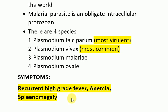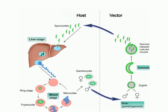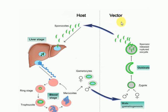Now let us discuss the life cycle of malaria. This image is showing the life cycle of malaria. The life cycle is divided into two parts: number one, the cycle that occurs in the host or human being — that is the sexual cycle — and number two, the cycle that occurs in the vector or mosquito, specifically the female Anopheles mosquito, which is the asexual cycle. The host cycle is then divided into two phases: the exoerythrocytic phase, or the intra-hepatic phase, and the erythrocytic phase.